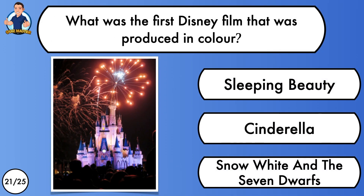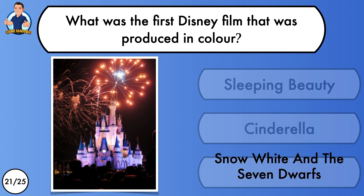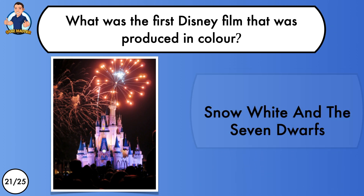What was the first Disney film that was produced in colour? Sleeping Beauty, Cinderella or Snow White and the Seven Dwarfs? And it was Snow White.